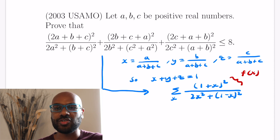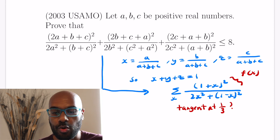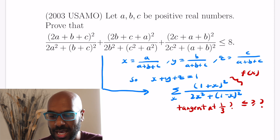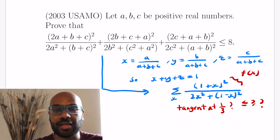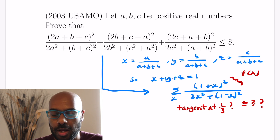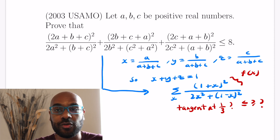We call the summand f(x) and the goal is to use the tangent trick. With three variables, equality likely holds at x = 1/3. We compute the tangent line to f(x) at x = 1/3 — it may give an upper or lower bound — and use that to establish the inequality, similar to the first problem. I want you to try this: leave your thoughts in the comments and share a full solution if you work it out.